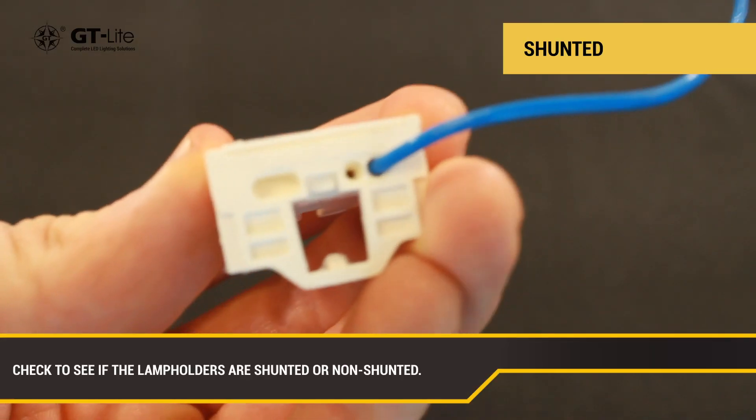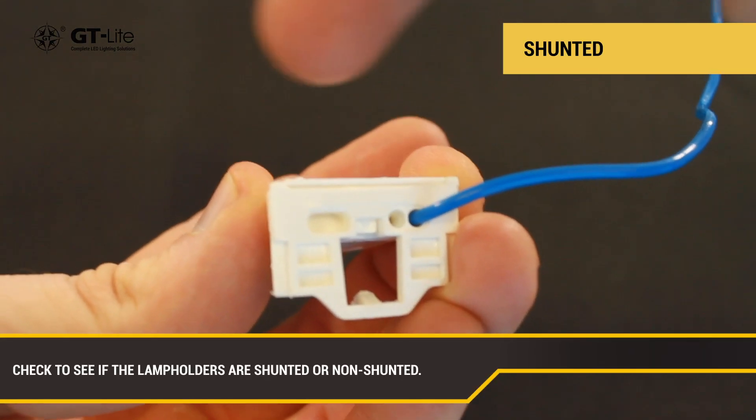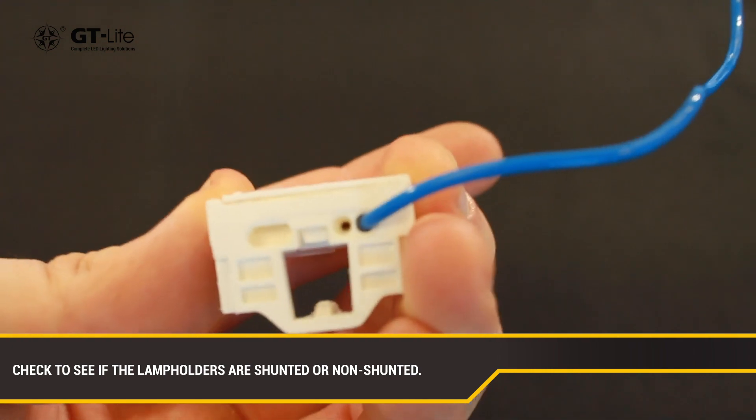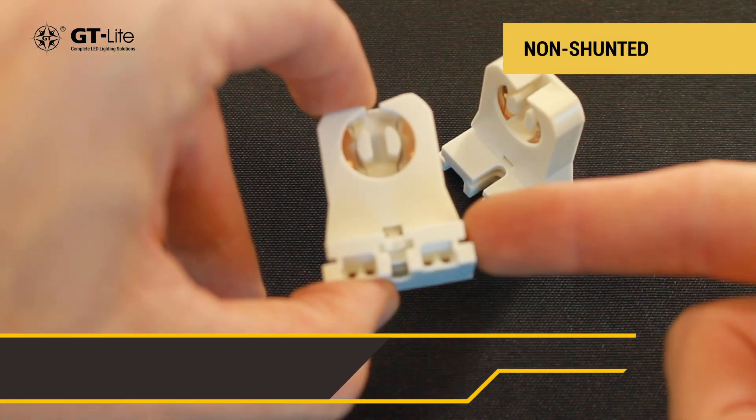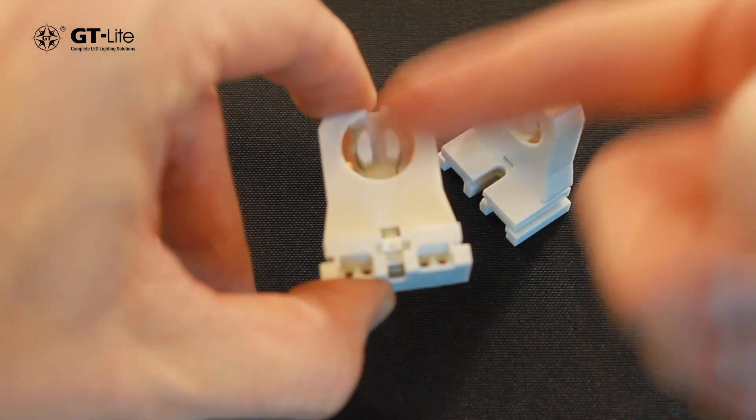Next, check to see if the fixture has shunted or non-shunted lamp holders. Shunted fixtures generally have lamp holders with sockets on only one side of the lamp holder, whereas non-shunted lamp holders will generally have sockets on both sides of the lamp holder.